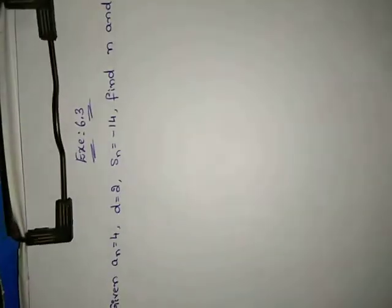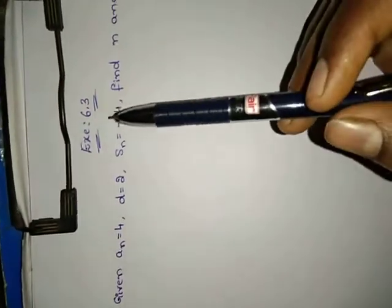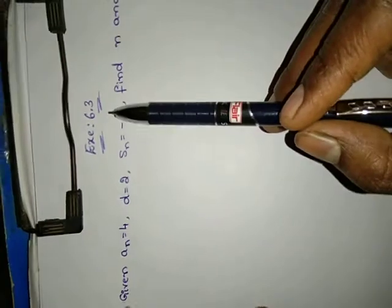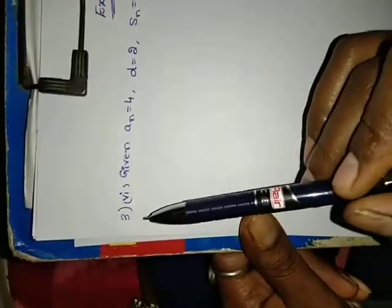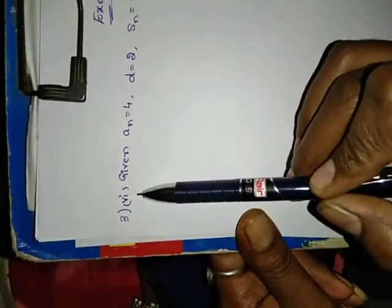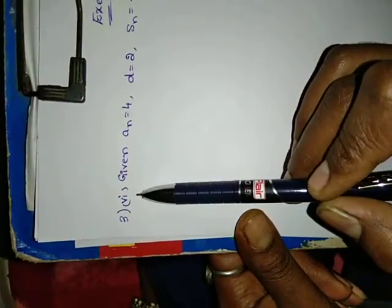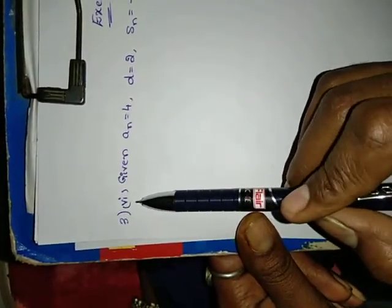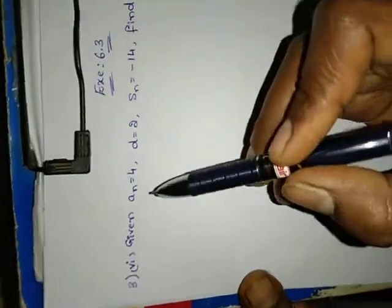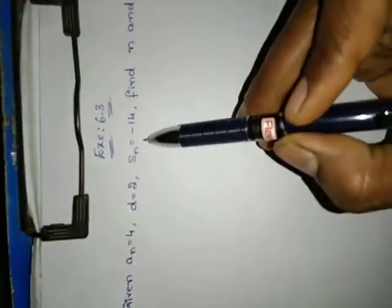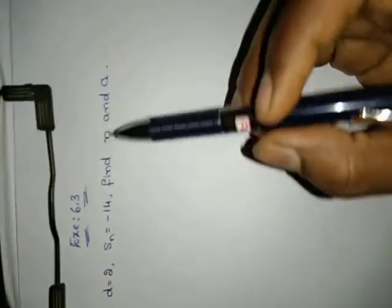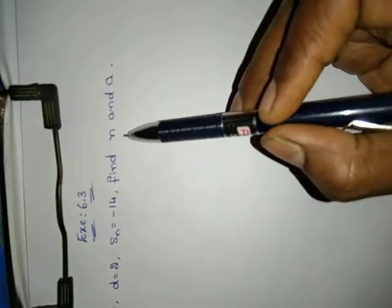Hello, hi. Welcome to Parnika Maths. Today we are going to discuss XI 6.3, 3rd row, 6th one. Already up to 5th one it is completed. Now let us see the 6th one. They have given AN value, D value, and SN value. We have to find N and A values.